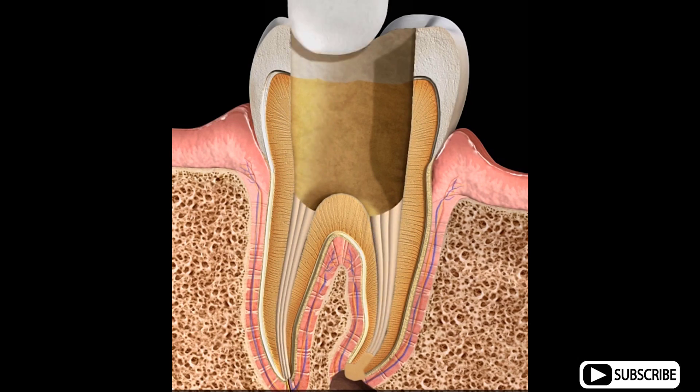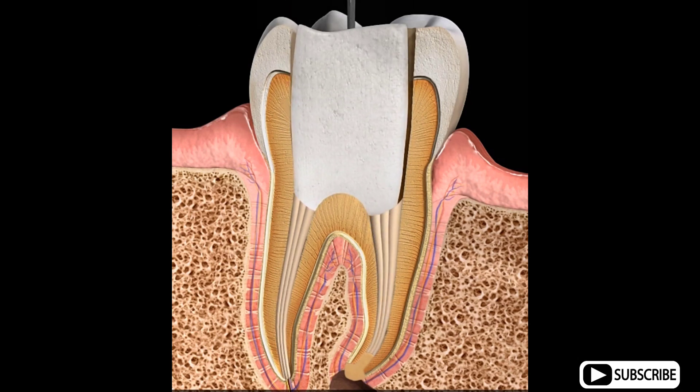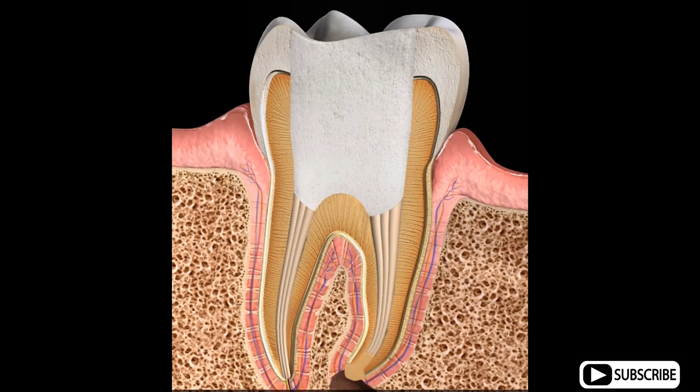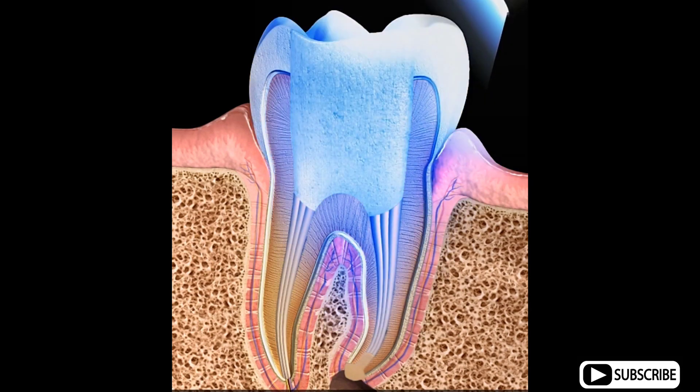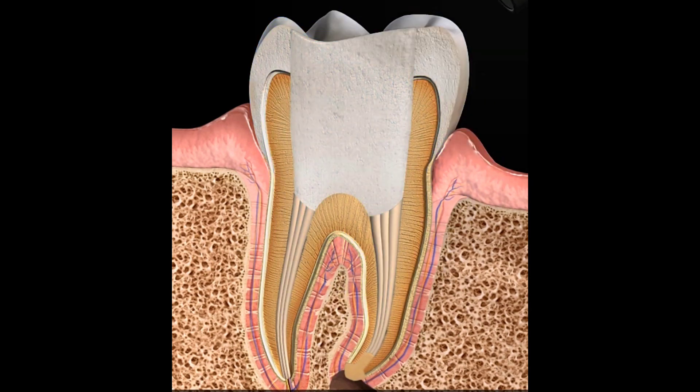The remainder of the tooth is restored temporarily with a composite material, which is set using a dental curing light. If the tooth shows no further signs of infection, it is later restored permanently.